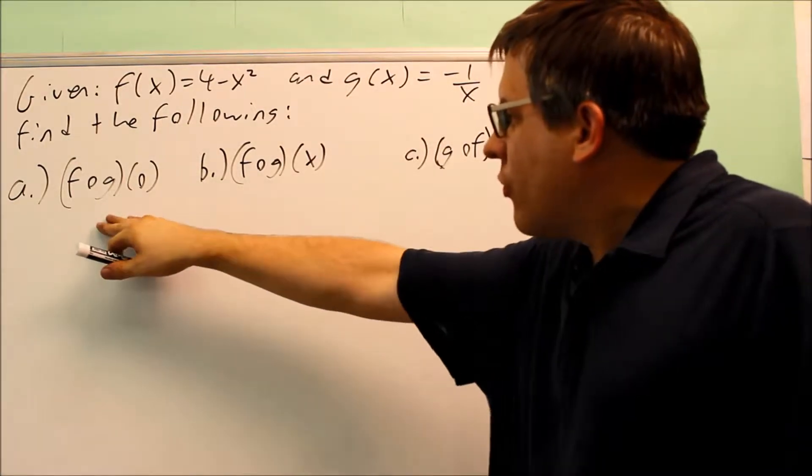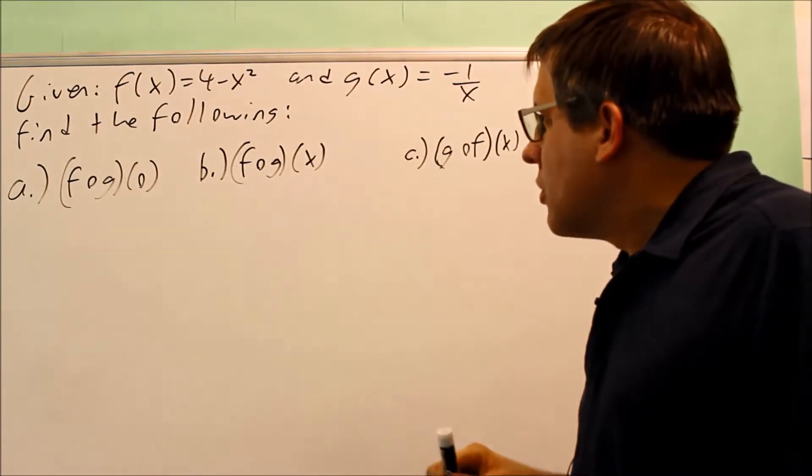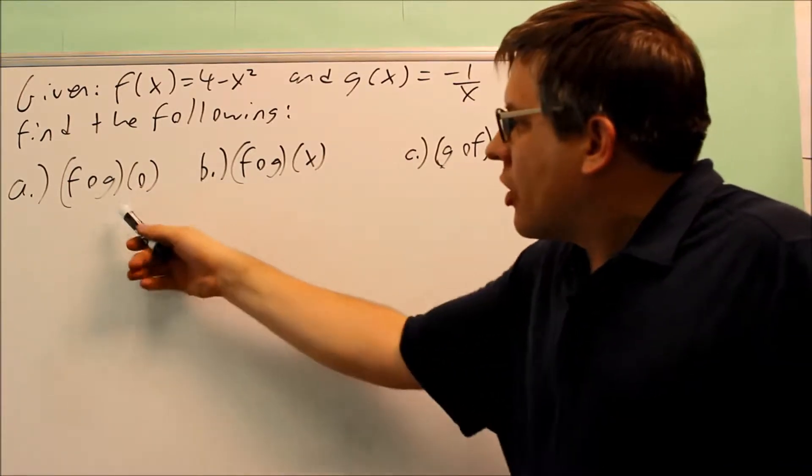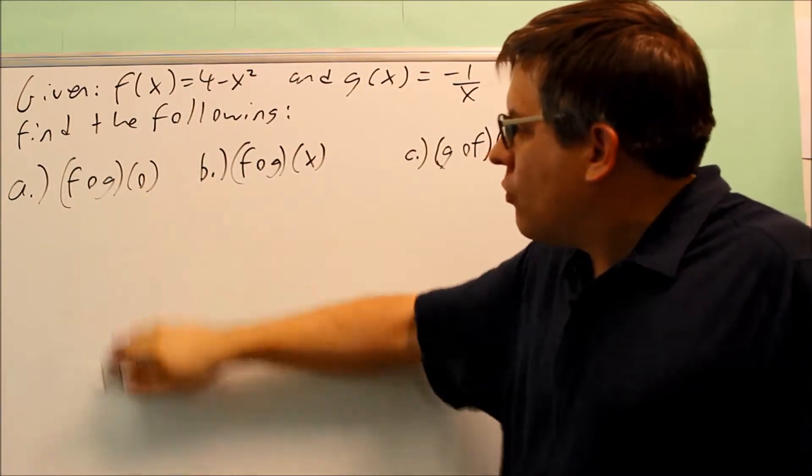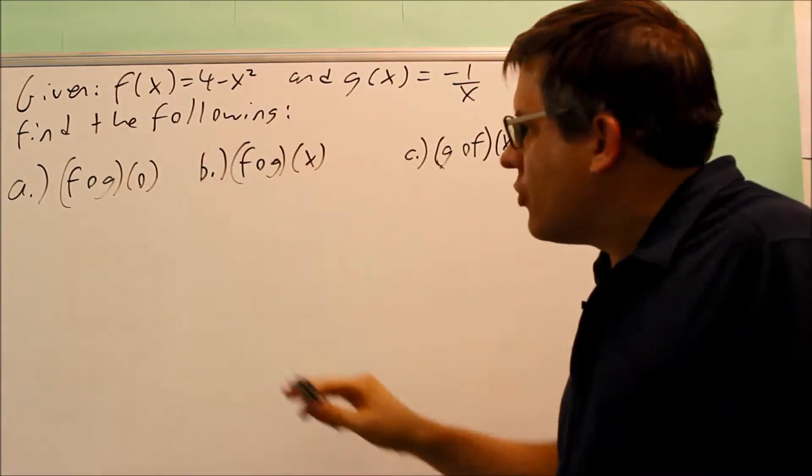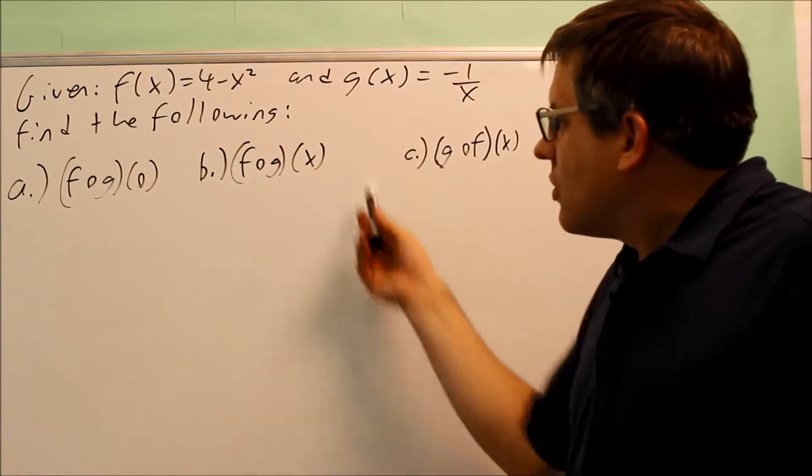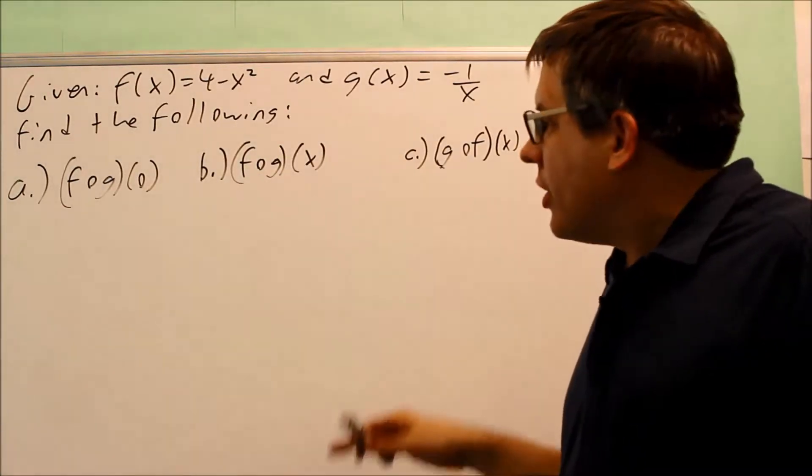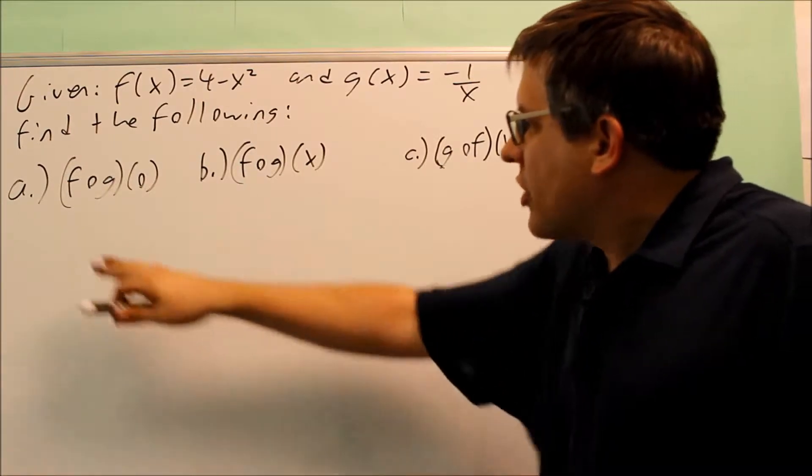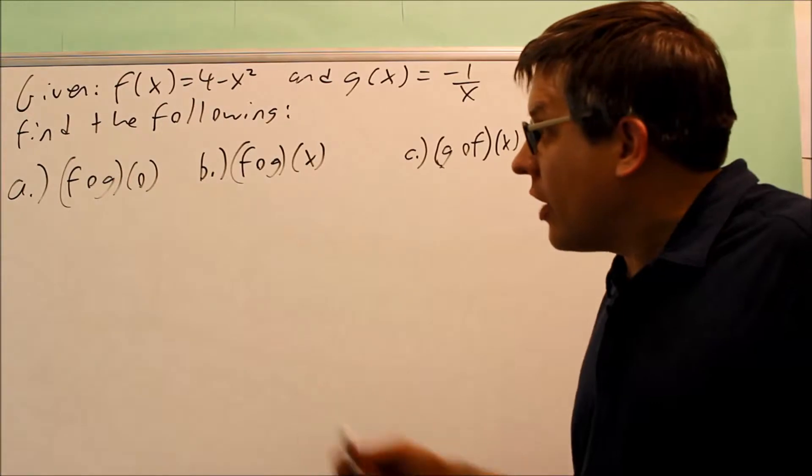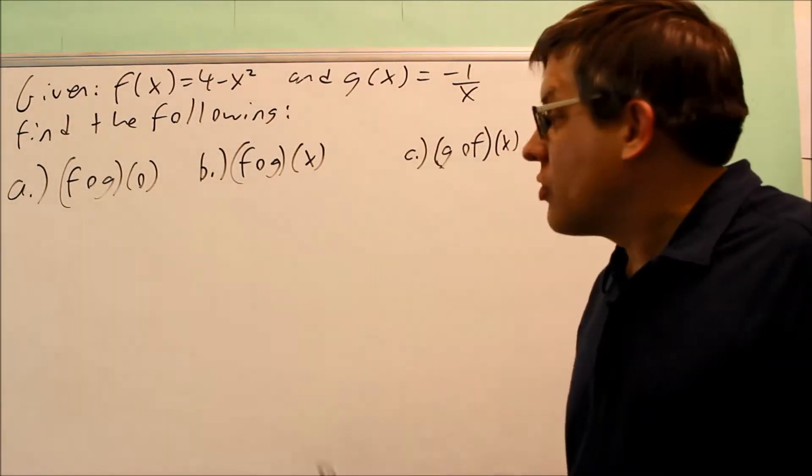So first, it asks us for f of g of 0 and f of g of x. Now, the previous example I did was I started out doing this all numerically. Instead of doing that, though, I'm going to start with f of g of x instead. Since I have to do that part anyway, I'm going to go through and complete that part. And then once I'm done, I'm going to use that with part a. I'll just put 0 into that answer, and that'll be another way that I can get f of g of 0. So I'll start with this.